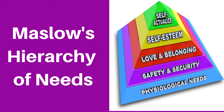He placed these needs on a visual hierarchy, now known as Maslow's hierarchy of needs, with what he believed were the most basic needs placed at the base of the pyramid. In his theory, he stated that people began working at the pyramid base and moved upward along the pyramid to eventually reach its pinnacle as they gained the skills necessary to meet the needs at each level.